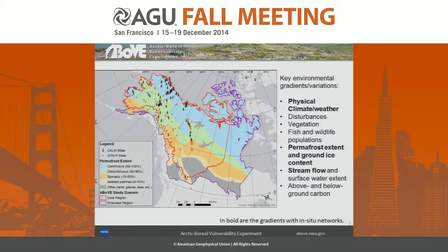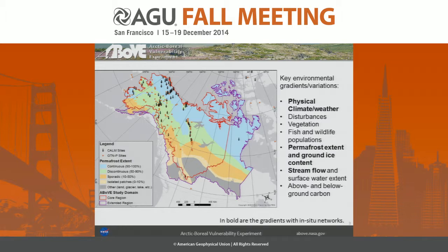This image shows the actual campaign region. The core is shown in red and the extended region is in purple, and it spans the environmental gradient variations common to the Arctic and boreal ecosystems. If you look on the right, there are bolded items which are the key environmental gradient variations, and in bold are the gradients that are within the in-situ networks.